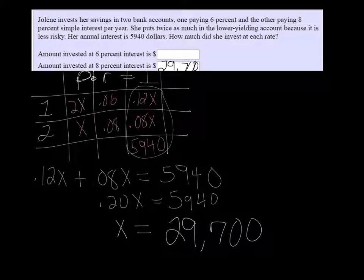In the other one she's putting twice as much as that. So we just multiply that by 2. It's 59,400. And there you have it.